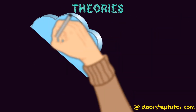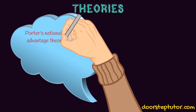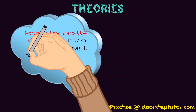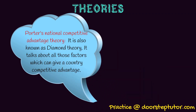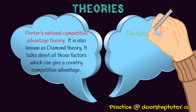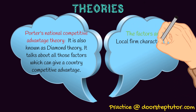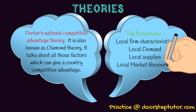Another very famous theory was given by Sir Michael Porter, a professor at Harvard Business School in the US. He basically gave this theory wherein he talked about all those factors in a country which can give a company a competitive advantage. There can be many factors which contribute to your company's growth. This theory is also known as the Diamond Theory. The various factors he talked about are: local firm characteristics, local demand, local supplies, and local market resources.